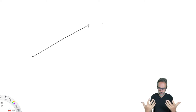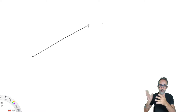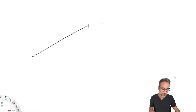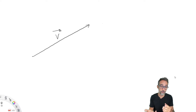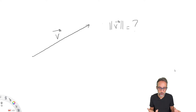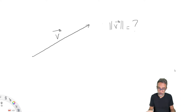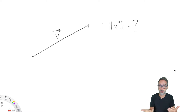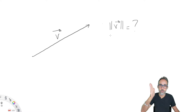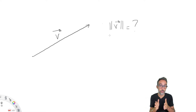Let's break down the rules for unitizing a vector. Let's say we have any vector in three-dimensional space, and we're going to name that vector v with an arrow — that's a very common way of notating vectors. We're also going to assume that the length of that vector is whatever value. I'm going to denote the length of a vector by using double vertical bars around the vector name.